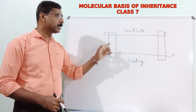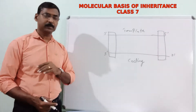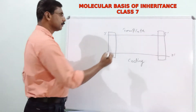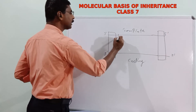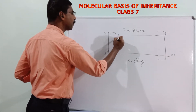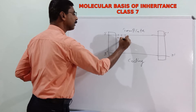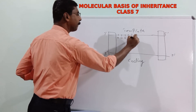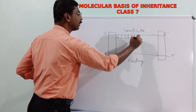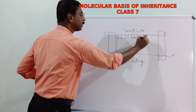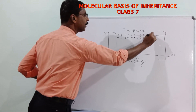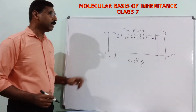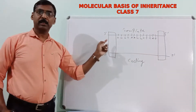Let us assume a base sequence for the template strand. Suppose the base sequence is: guanine, guanine, cytosine, thymine, adenine, adenine, guanine, guanine, cytosine, thymine, thymine, adenine, thymine. This is the base sequence of the structural gene.